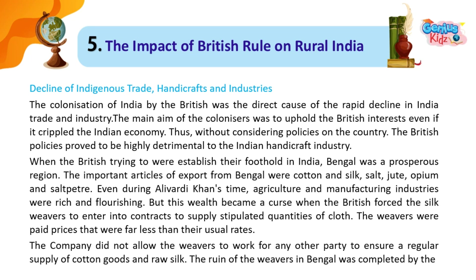When the British were trying to establish their foothold in India, Bengal was a prosperous region. The important articles of export from Bengal were cotton and silk, salt, jute, opium and saltpeter. Even during Alivardi Khan's time, agriculture and manufacturing industries were rich and flourishing. But this wealth became a curse when the British forced the silk weavers to enter into contracts to supply stipulated quantities of cloth.